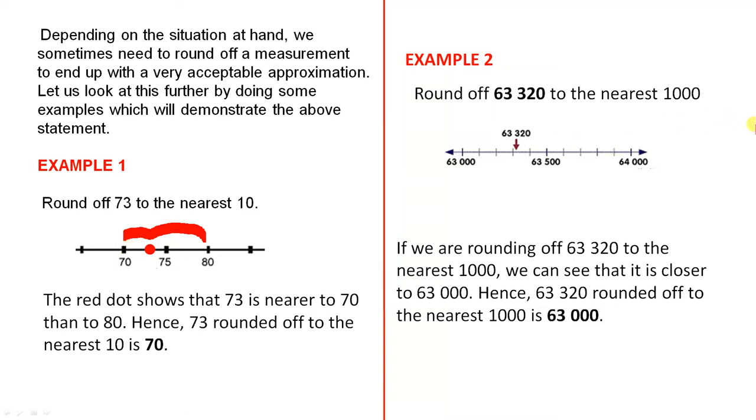Example 2, round off 63,320 to the nearest 1,000. If we are rounding off 63,320 to the nearest 1,000, we can see that it is closer to 63,000. Hence, 63,320 rounded off to the nearest 1,000 is 63,000. Because you can see the distance from there to there, and you can see the distance from there to there, so it's a lot closer to 63,000. Now these are only sketches, but they give you just a good idea just by looking at them.